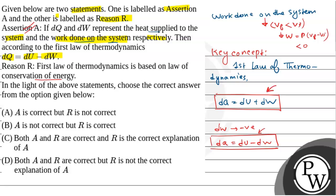Our reason is correct, and our reason is the correct explanation of our assertion. So our option C, that both A and R are correct and R is the correct explanation of A, is our correct answer.